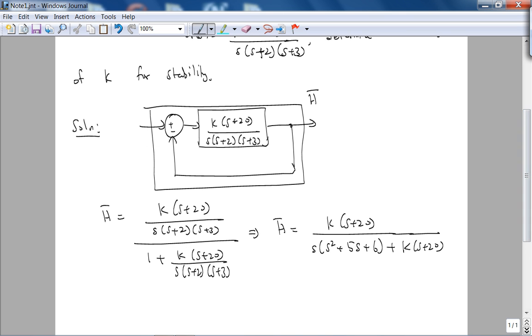So if you rewrite this properly, the denominator polynomial of a closed tube transfer function is basically going to be s cubed plus 5s squared plus k plus 6 times s, plus 20k. So there you have it.